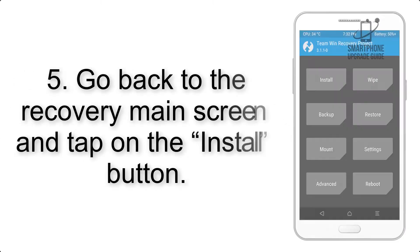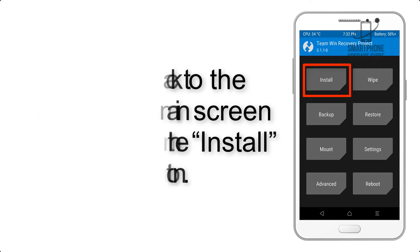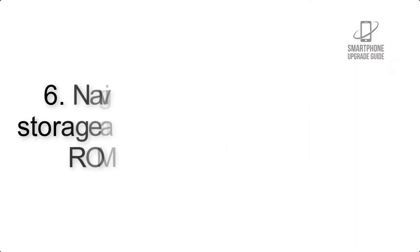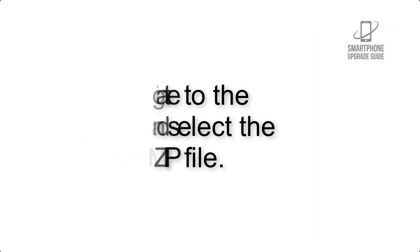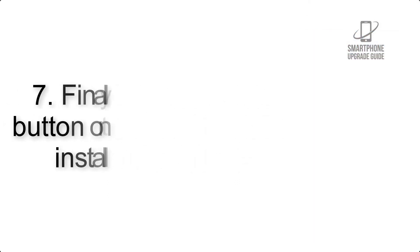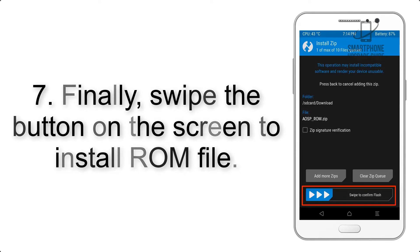Step 4: Swipe the button to wipe the device. Step 5: Go back to the recovery main screen and tap on the Install button. Step 6: Navigate to the storage and select the ROM zip file.